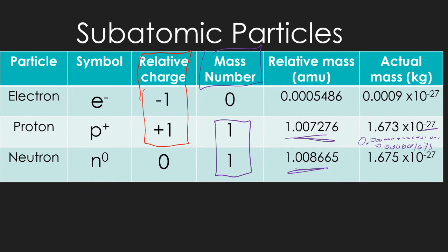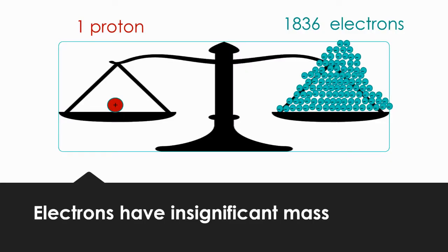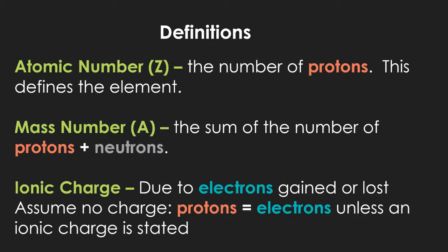Electrons have negative charge — that's why we put a minus sign. Protons have positive charge — that's why we put a plus sign. Neutrons have no charge, so they get a zero. For atomic number, the symbol Z was chosen even though there's no Z in 'atomic number.' The atomic number is the number of protons.